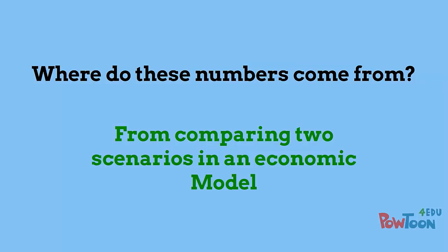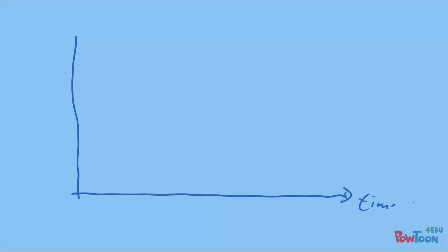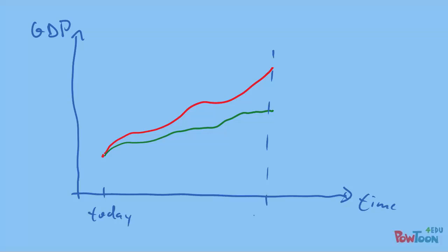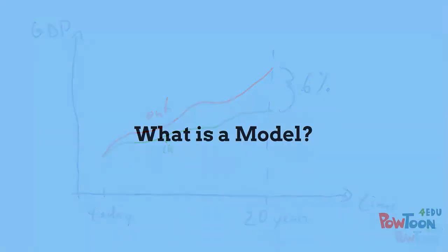These numbers come from comparing two scenarios in an economic model. You can use an economic model to simulate forward what you think will happen with GDP over time depending on certain assumptions. If you change assumptions you may get slightly different paths for that GDP, and the difference between GDP at some point — say 20 years hence, say a 6% difference — these are the sort of numbers being reported. Some models say we are better off if we stay in the EU; others predict that staying in the EU will actually deliver a slower growth rate.